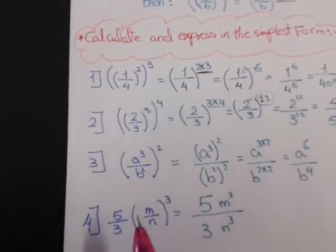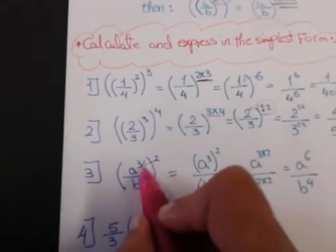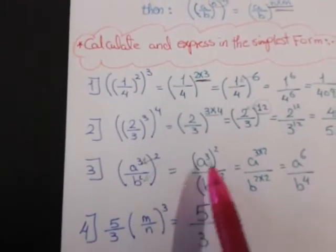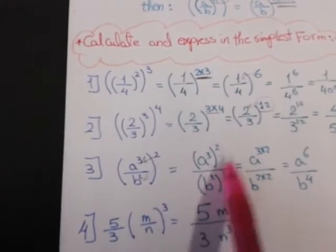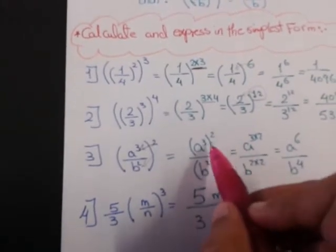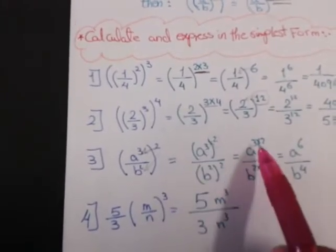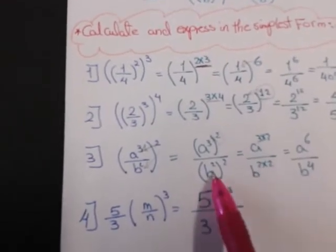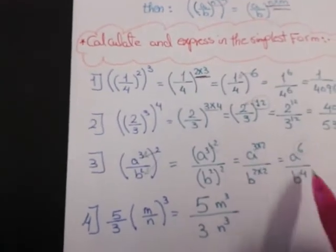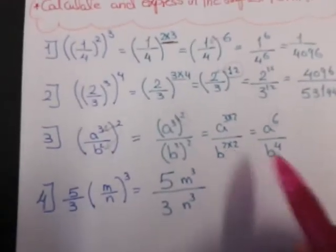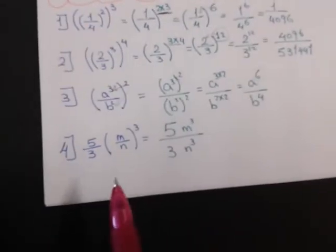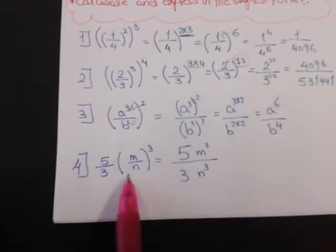Example 3: a power 3 over B power 2, all to the power 2. First I distribute the power 2 to a power 3 and B power 2, giving a power 3 all to the power 2, over B power 2 all to the power 2. Then I multiply: 3 times 2 gives a power 6, and 2 times 2 gives B power 4.